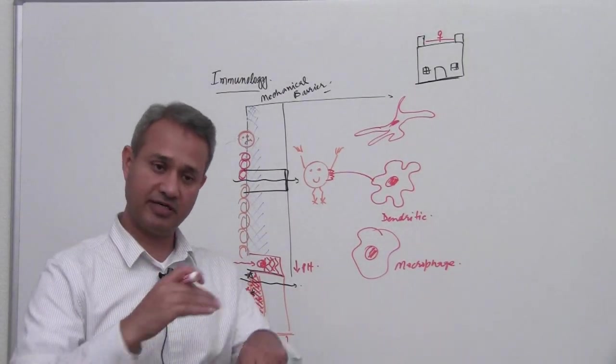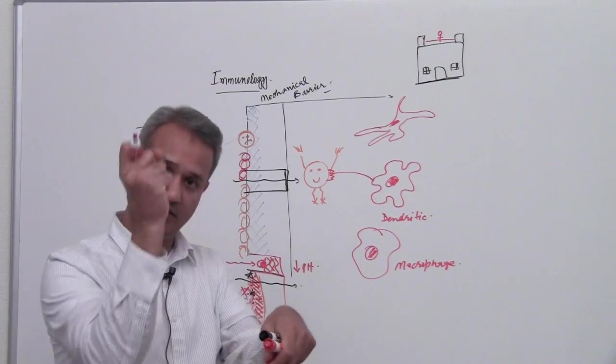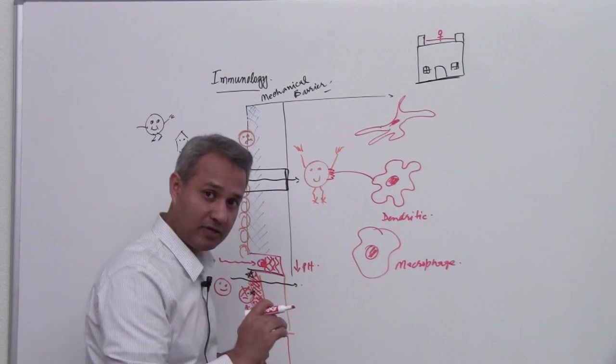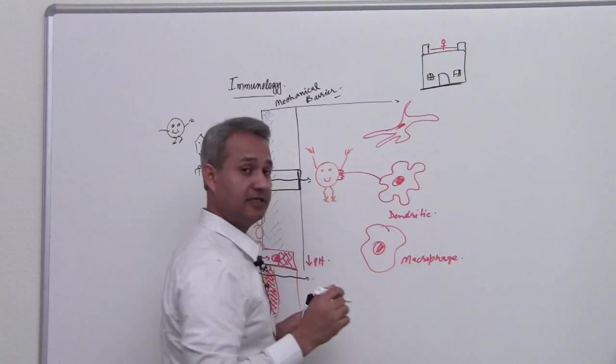Most of the time it is a dendritic cell which is sitting right below the surfaces, so as soon as the pathogen enters there they grab it. So what they do is, they grab the pathogen, the dendritic cell, and they eat it up.